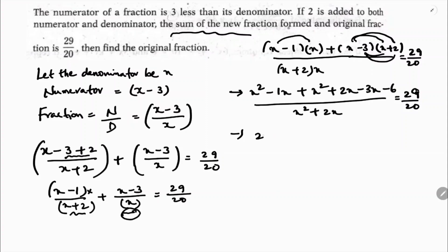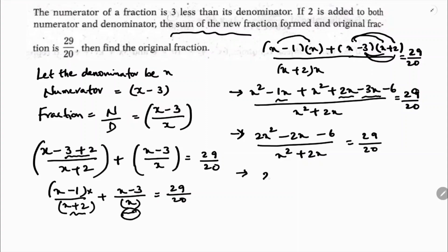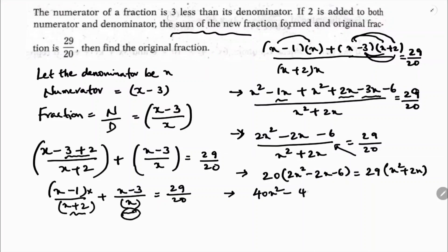Now combining: x squared plus x squared gives 2x squared; and minus x minus 3x plus 2x gives minus 2x, minus 6; over x squared plus 2x equals 29 by 20. Now I will cross multiply: 20 times 2x squared minus 2x minus 6. So 20 times 2 is 40x squared, minus 40x, minus 120. And on the right: 29 times x squared plus 2x gives 29x squared plus 58x.